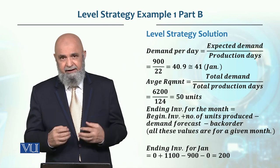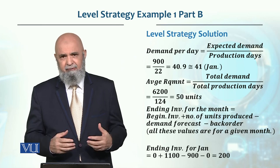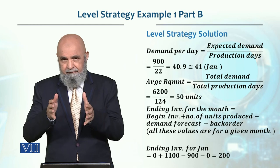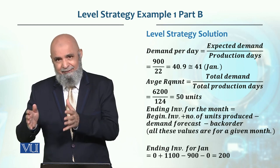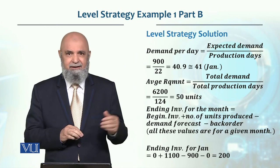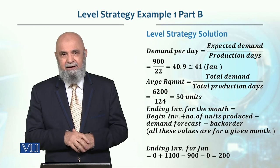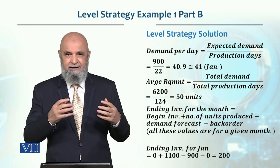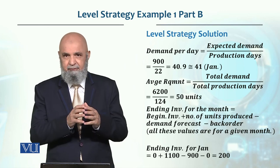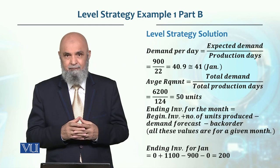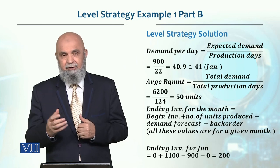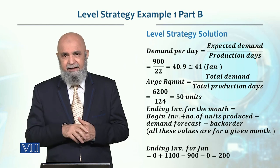For the inventory calculation, it is basically the ending inventory of the month. For January, the beginning inventory of the month is given. We produce 50 units per day, minus the demand of 50 units per day. The demand per day comes out to 100 units per day.